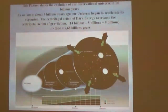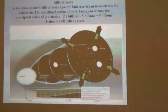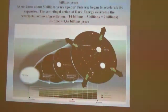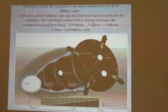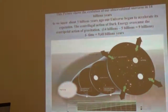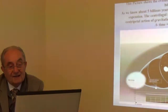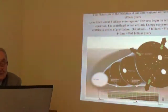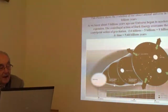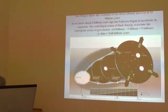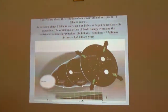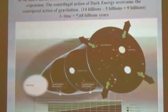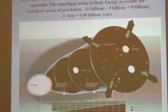This picture shows the evolution of our observational universe over 14 billion years. About 5 billion years ago our universe began to accelerate its expansion — the centrifugal action of dark energy overcame the centripetal action of gravitation. Fourteen billion minus five equals 9 billion, and we know that the lambda time is 9.68 billion years.